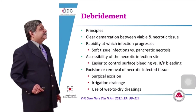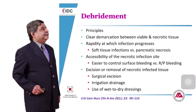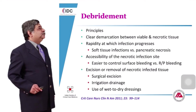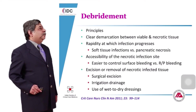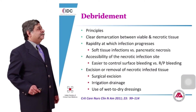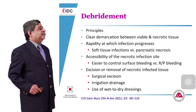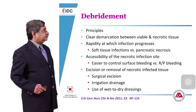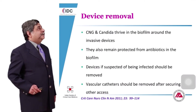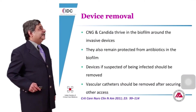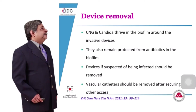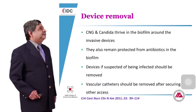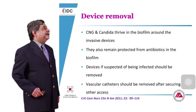Excision or removal of necrotic tissue can be done by three methods: surgical excision, irrigation and drainage, and wet-to-dry dressing — where wet dressings, as they dry out, remove necrotic tissue, and you keep changing them until the area is debrided. The third method of source control is device removal. Coagulase-negative staphylococci and Candida thrive in the biofilm around invasive devices and remain protected from antibiotics within that biofilm.